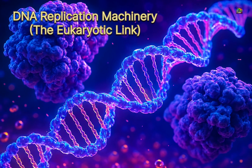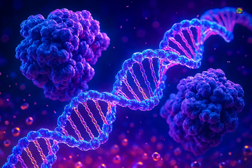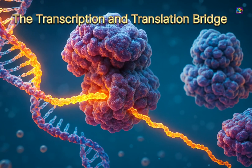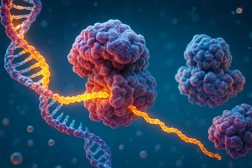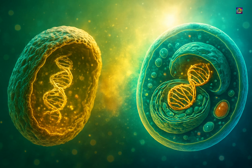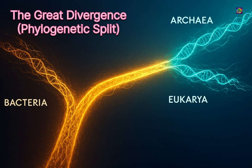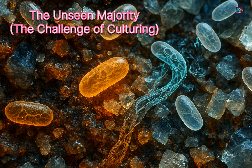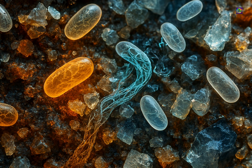The machinery they use for DNA replication, transcription, and translation shows closer similarity to eukaryotes than to bacteria, revealing a shared evolutionary heritage with the lineage that would eventually give rise to all complex life. This molecular signature suggests that the divergence between archaea and the ancestors of eukarya occurred after the split from bacteria, yet before the great diversification of complex cells.